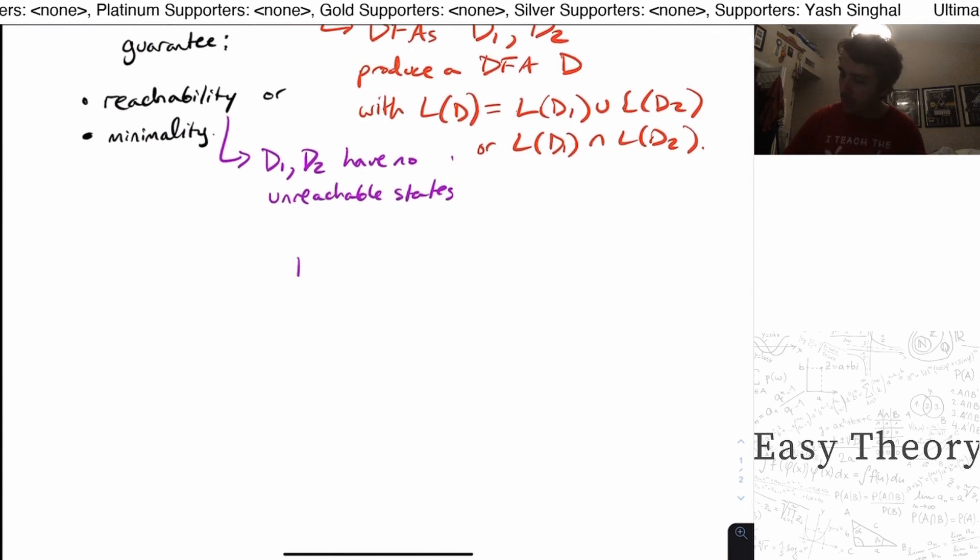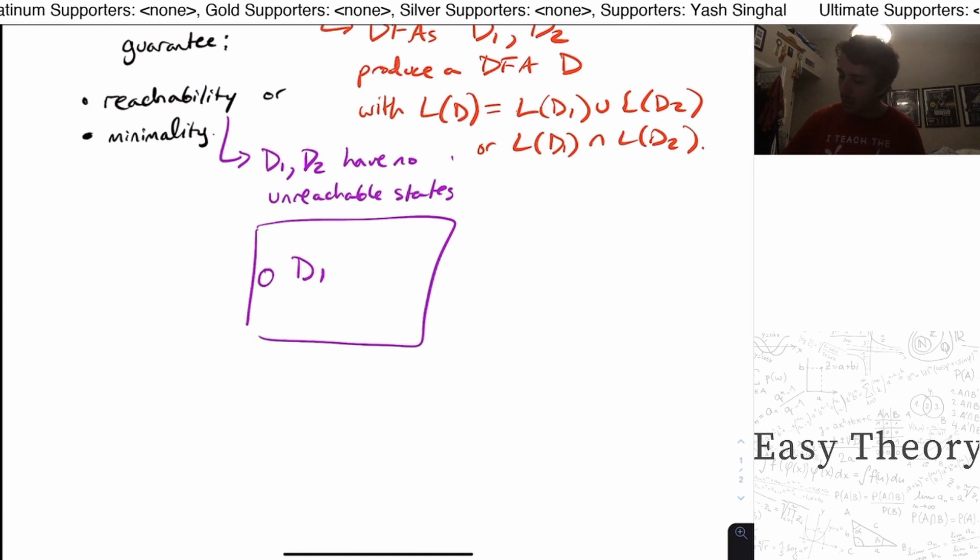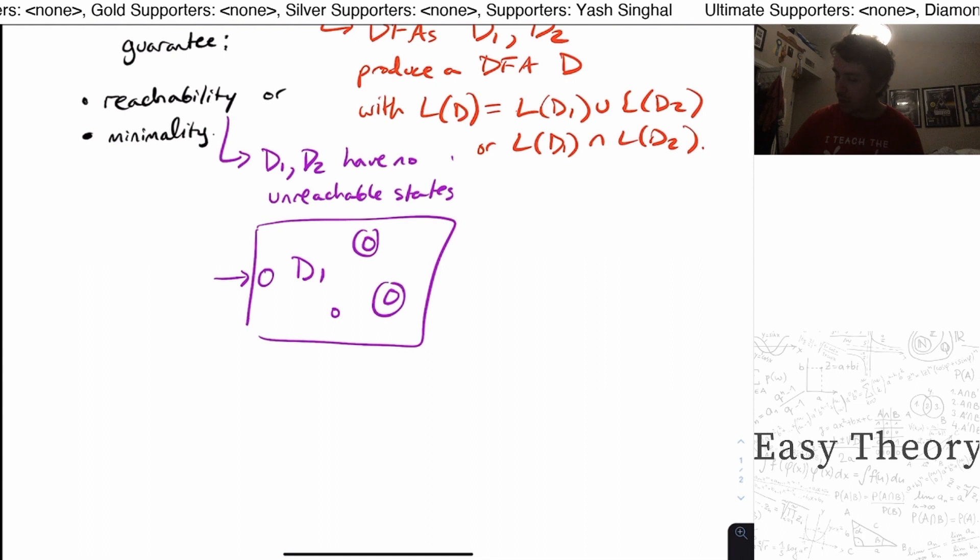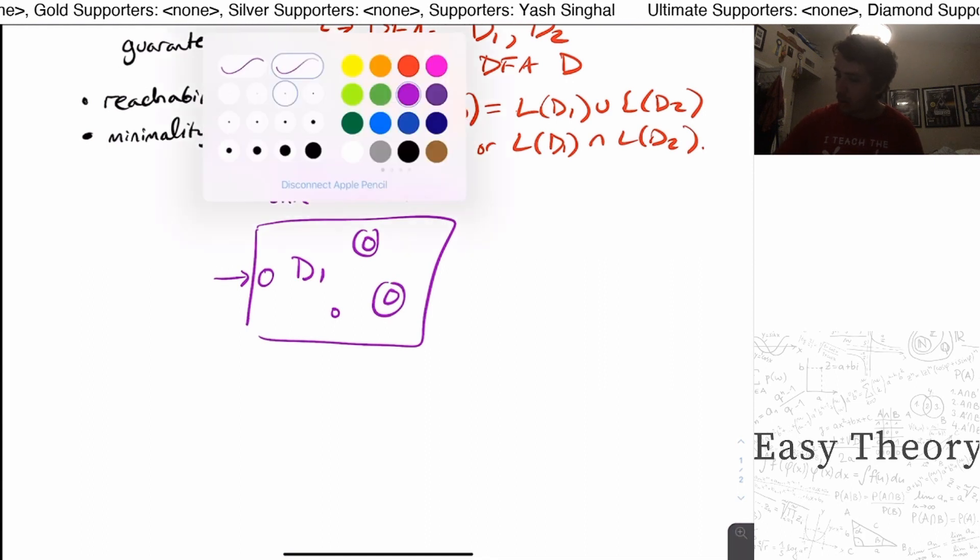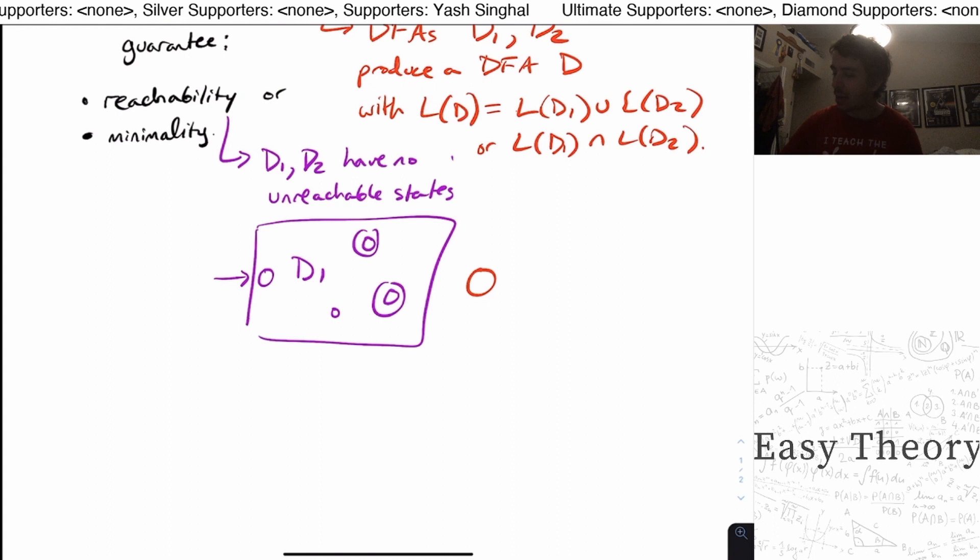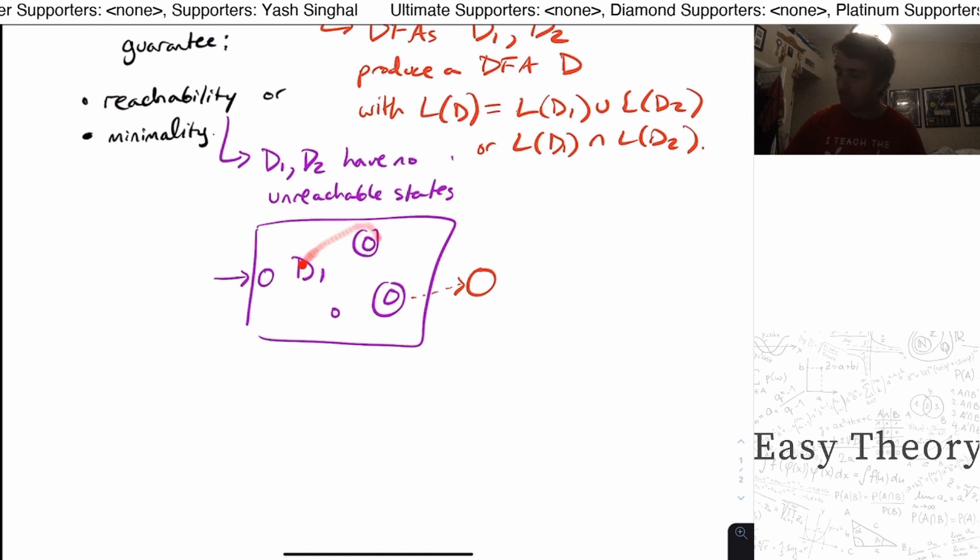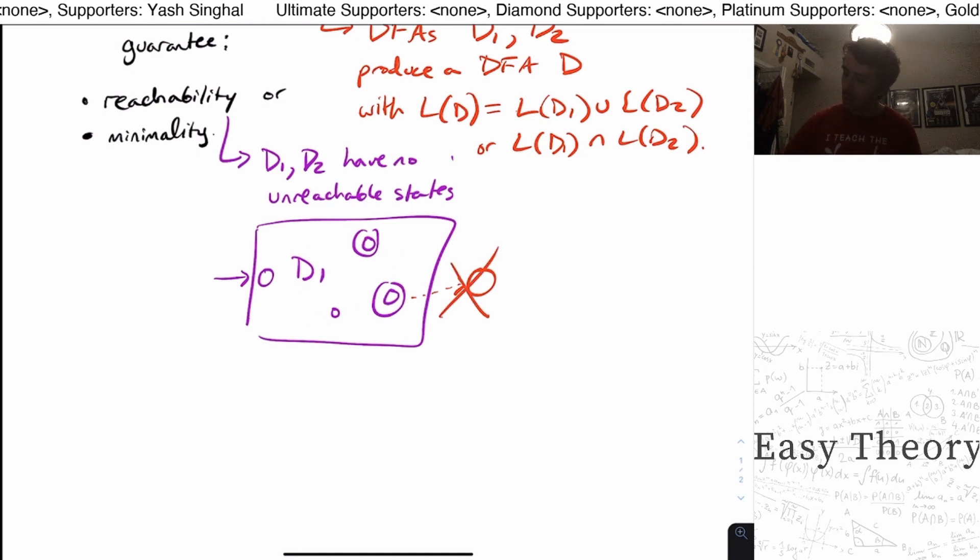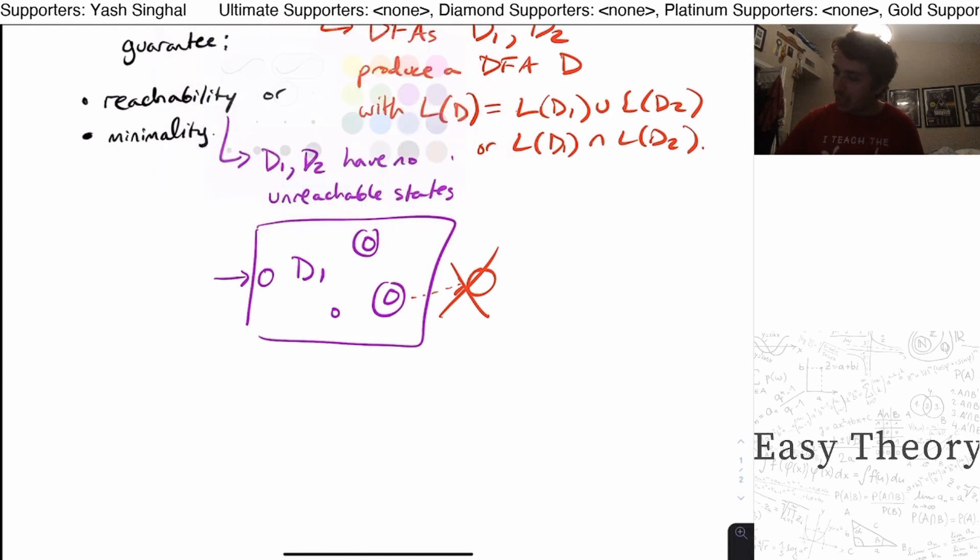Well, suppose that we have the machine D1 right here. And we have the start state right here and then some other states inside of it. But it's not possible for there to exist a state out here that is unreachable from any state within this purple circle right here. So this is not allowed.